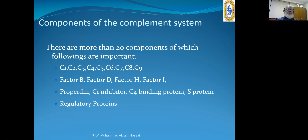The six beneficial effects of complement activation are: it triggers inflammation; chemotactically attracts phagocytes to the infection site; opsonization; lysis of gram-negative bacteria and human cells displaying foreign antigen; it plays an important role in activation of naive B-lymphocytes; and removal of harmful immune complexes from the body. There are more than 20 components, including C1 through C9, factors B, D, H, and I, and regulatory proteins like properdin, C1 inhibitor, C4 binding protein, and S protein.